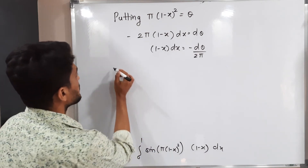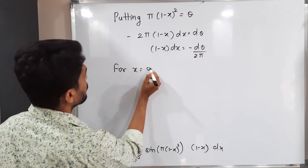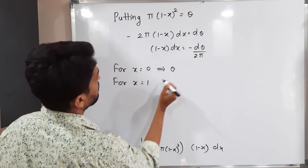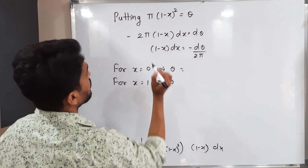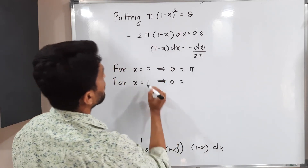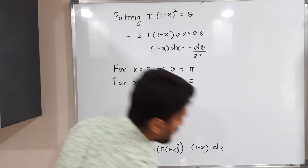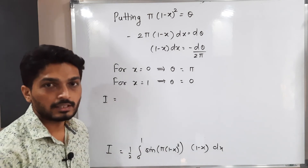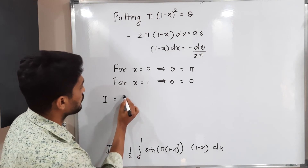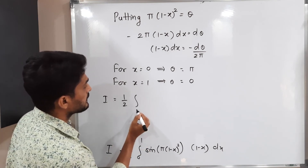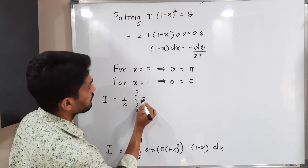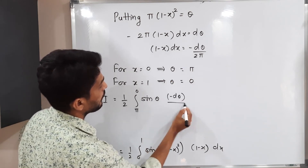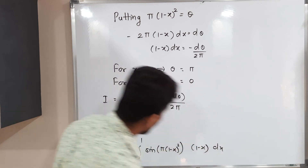Writing the integral with new limits: I = (1/2) ∫_π^0 sin(θ) · (−dθ / 2π). The constant 2π comes outside, giving 1/(4π). Using the property of definite integrals — interchanging limits removes the minus sign — we have I = (1/(4π)) ∫₀^π sin(θ) dθ.